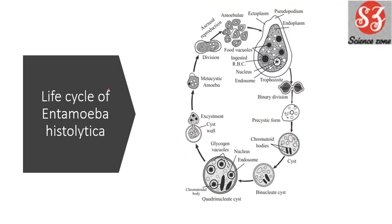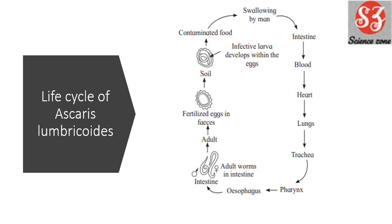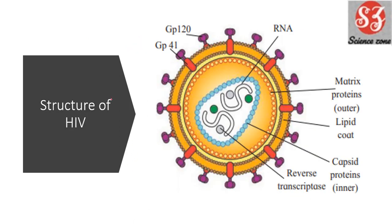Next is life cycle of Entamoeba histolytica — this is also an important diagram for long answer questions. You need to draw this diagram while writing the long answer; without it your answer is incomplete. Next is life cycle of Ascaris lumbricoides — this diagram is also important for long answer, though it will never be asked as a standalone draw-and-label diagram. Next is structure of HIV — this is important because it can be asked as 'draw neat labelled diagram of HIV,' and it has been asked many times before.